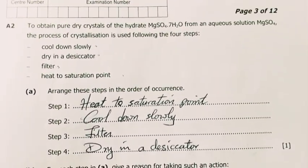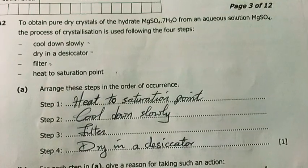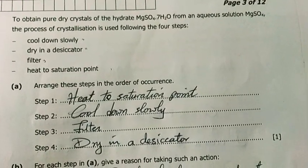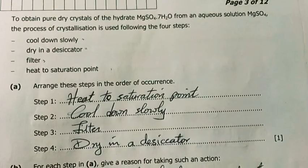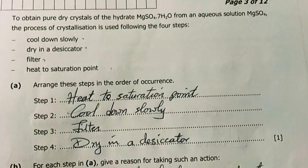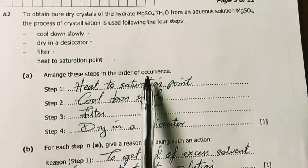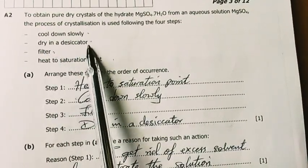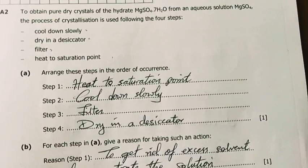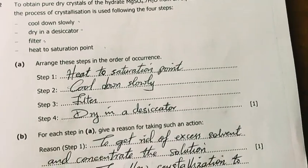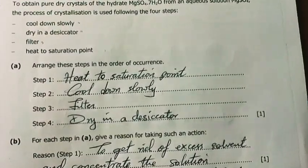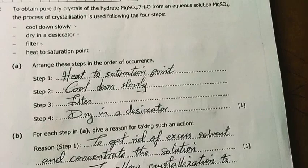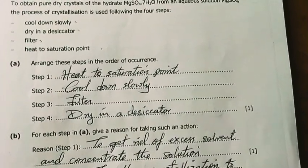Question two. To obtain pure dry crystals of the hydrate, magnesium sulfate heptahydrate, from an aqueous solution of magnesium sulfate, the process of crystallization is used following four steps. Arrange these steps in order of occurrence. My take was that step one was heat to saturation point. Step two was cool down slowly. You cool down slowly, meaning you leave it to cool down naturally. Don't force it to cool. Number three, filter. Then number four, dry in a desiccator. A desiccator is a big glass-like vessel where you put your substances for them to dry.